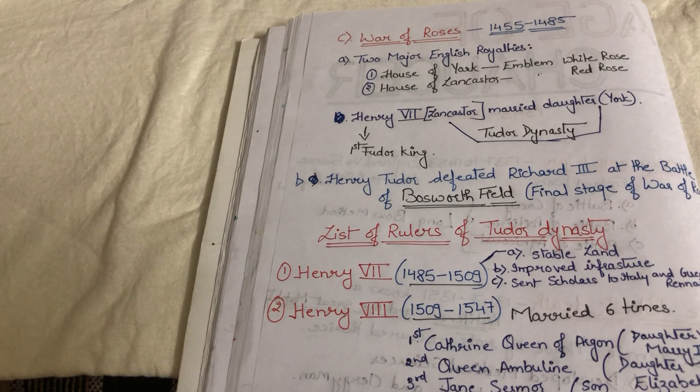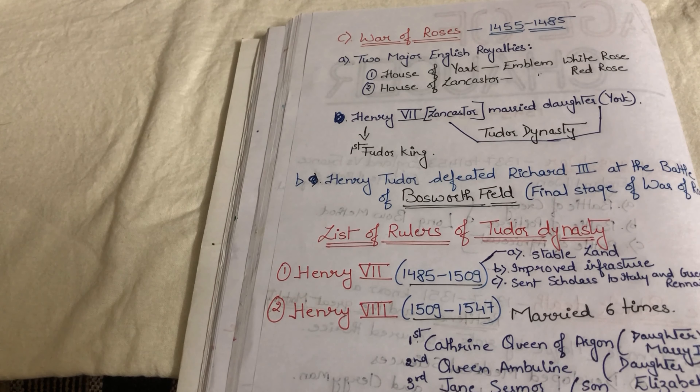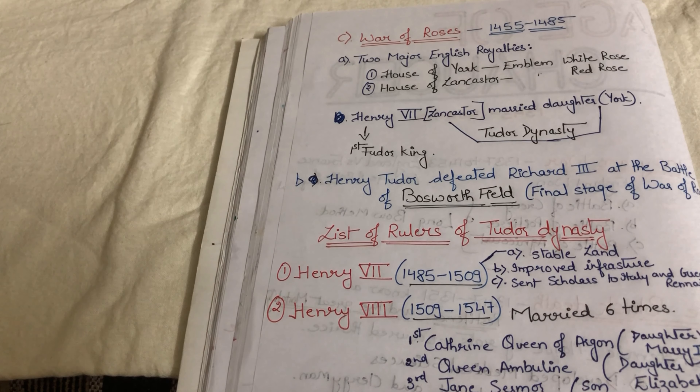From here onwards, the Tudor Dynasty started with Henry Tudor VII. The first ruler of the Tudor Dynasty was Henry VII.